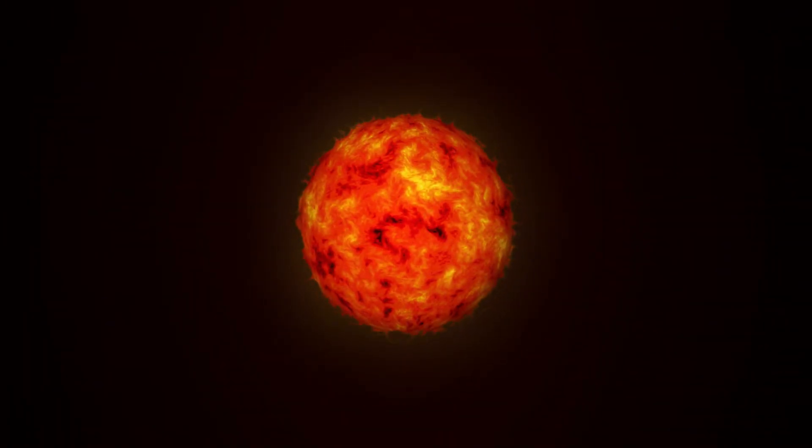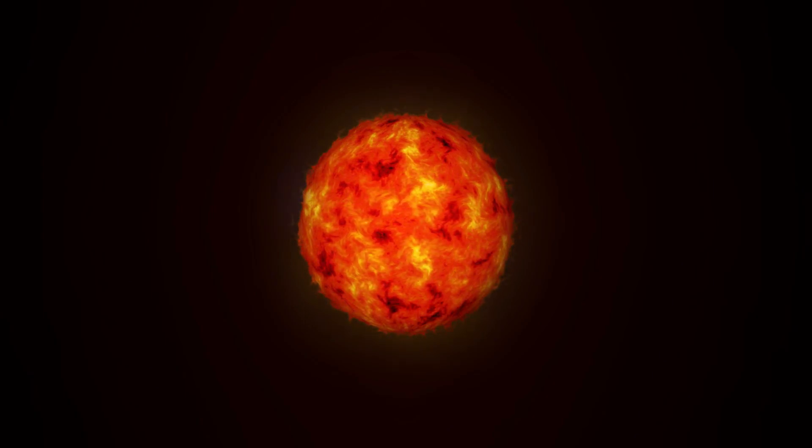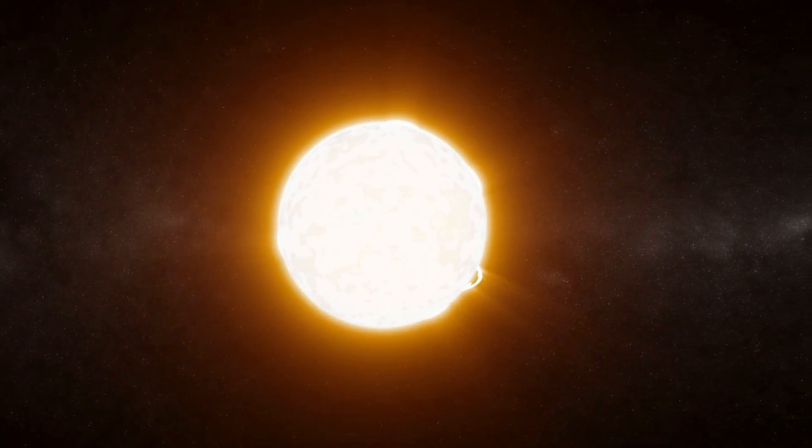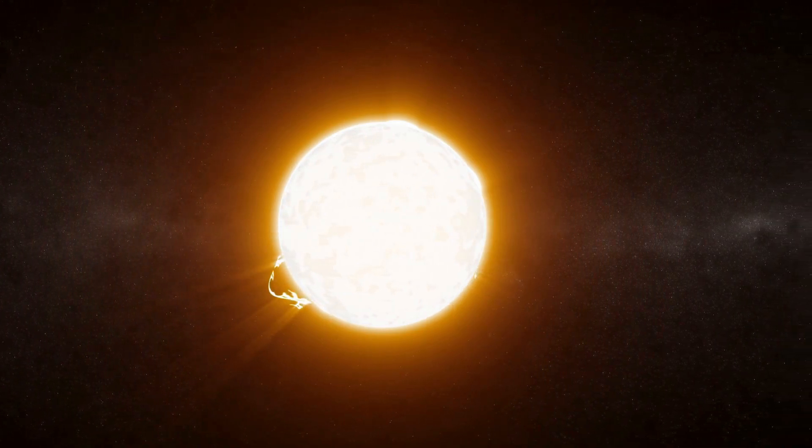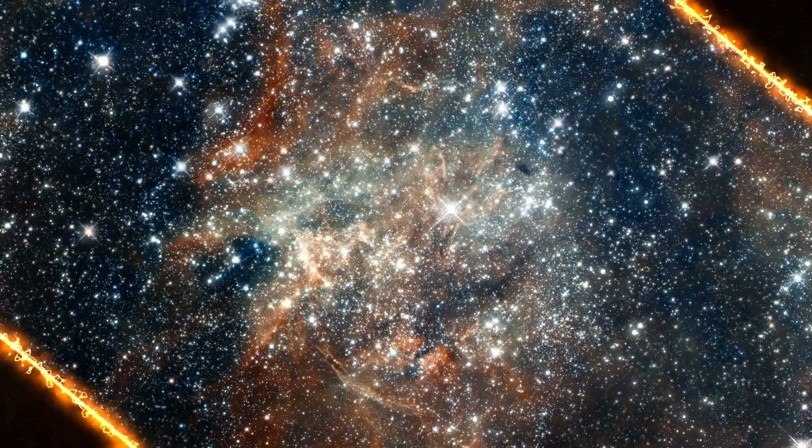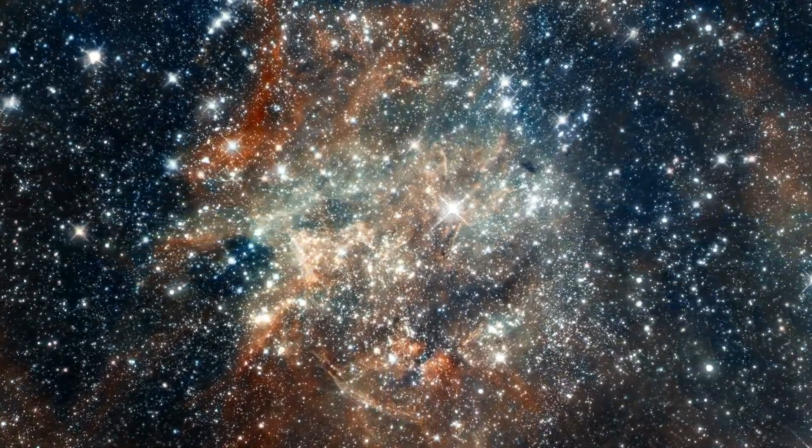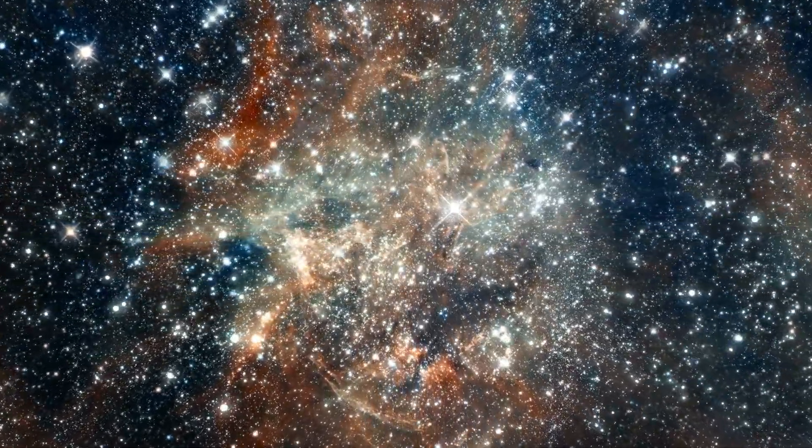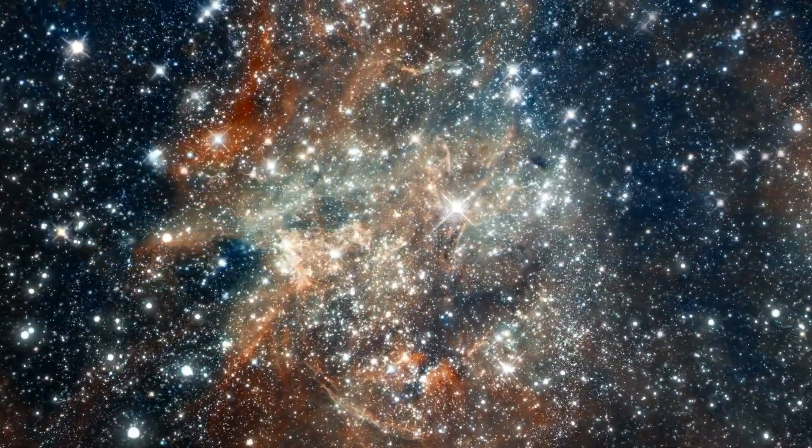Though this radiation pressure wouldn't suffice to thwart one's descent into the sun, it proves adequate to prevent the sun's comparatively lightweight gas from collapsing inward upon itself. This delicate equilibrium between gravitational pull and pressure manifests across the spectrum of known stars.